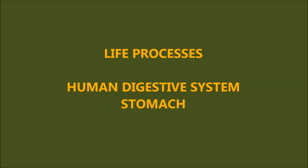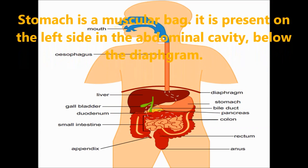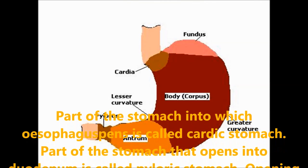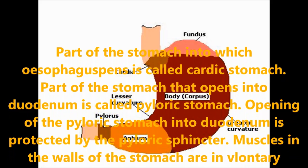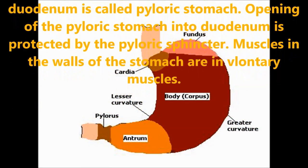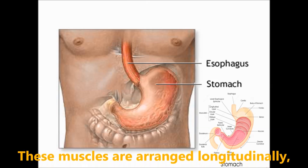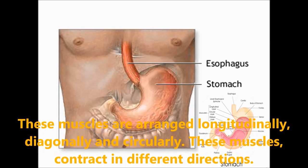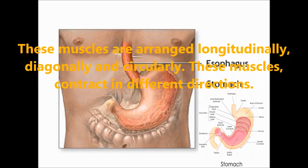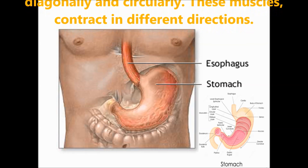The function of the stomach. Stomach is a muscular sac present on the left side in the abdominal cavity below the diaphragm. The part of the stomach into which the esophagus opens is called the cardiac stomach. The part that opens into the duodenum is called the pyloric stomach. Opening of the pyloric stomach into the duodenum is protected by the pyloric sphincter. The muscles in the walls of the stomach are involuntary and are arranged longitudinally, diagonally and circularly, causing food to be churned in the stomach.